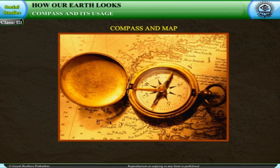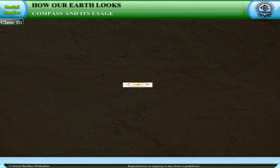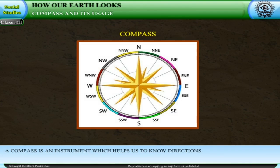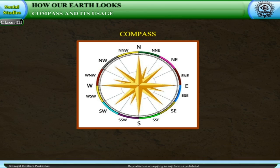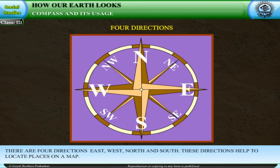Look at the map — you can find the picture of a compass on the map. A compass is an instrument which helps us to know directions. There are four directions: east, west, north, and south.